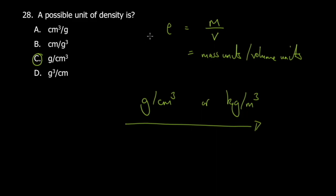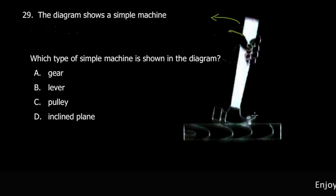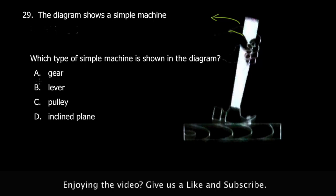Question 29: the diagram shows a simple machine — someone's hands using a hammer to remove a screw from a block of wood. You grip the screw through the opening and push outward, creating a turning effect. This machine is a lever.